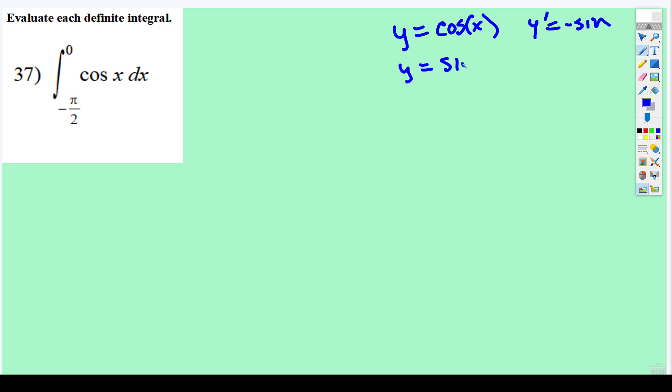And if y is sine, its derivative is cosine. So perfect, going backwards, the integral of cosine is sine.